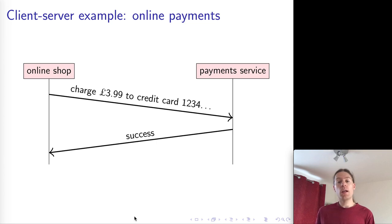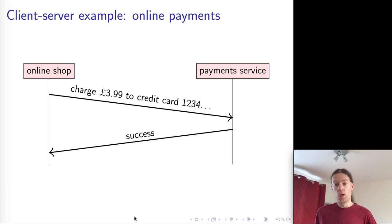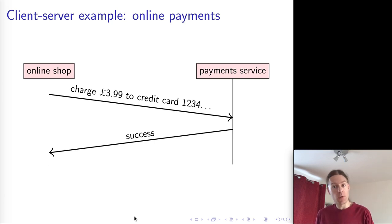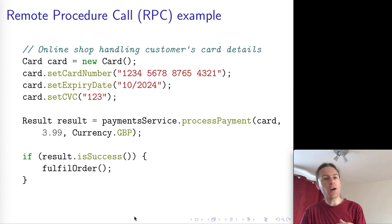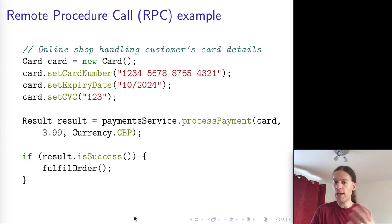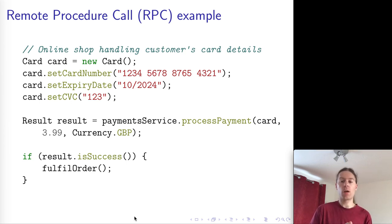Let's have a look at what the code might look like. Imagine you are one of the programmers working on the side of the online shop, writing the code that handles credit card payments and talks to the payment service. You might have a card object in your code base, create a new instance of it, and give it the credit card number, expiry date, and the three digits on the back — packaging all of this up as a card object.